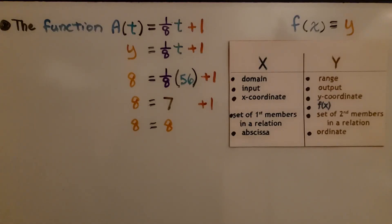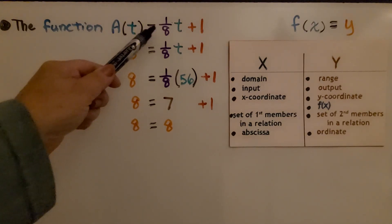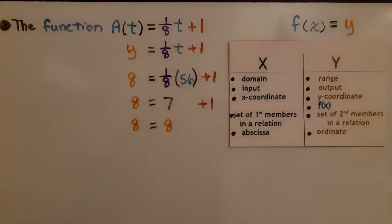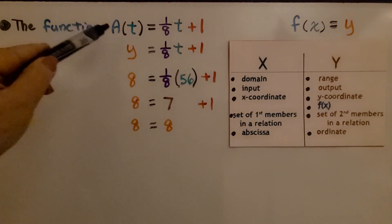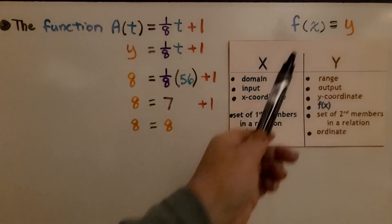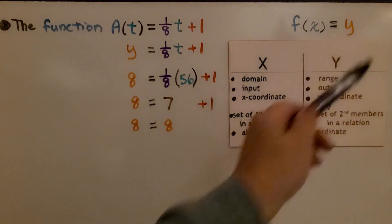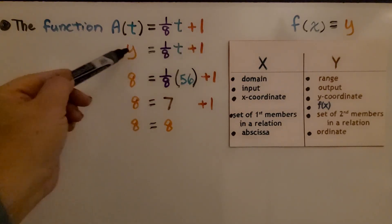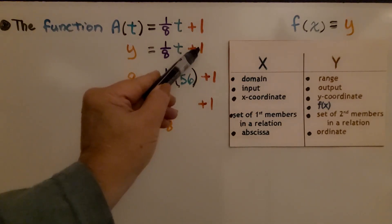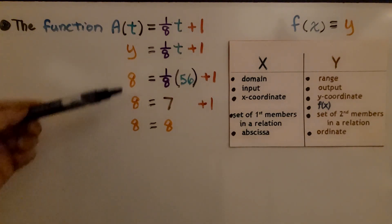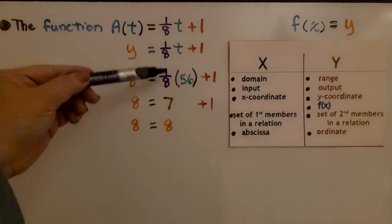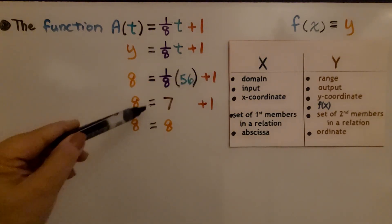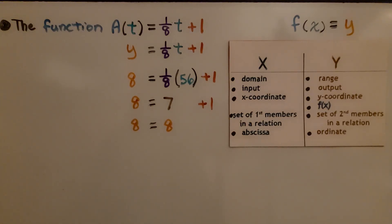We have the function A(t) equals 1/8 t plus 1, because we already had 1 cup of lemon juice. Since the function A(t) is the same thing as f(x) equals y, we have y equals 1/8 t plus 1. So that's in slope-intercept form, isn't it? Here's our initial value B, our y-intercept. That means if we have 1/8 times the time, it was 56, plus 1, we have 8 equals 7 plus 1, or 8 equals 8.